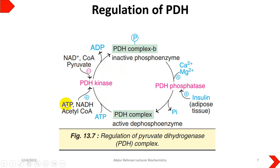When energy, NADH, and acetyl-CoA are already sufficient, there is no need for PDH to remain active, so it is phosphorylated by PDH kinase. However, if there are high concentrations of NAD, Coenzyme-A (not acetyl-CoA), and pyruvate, these have an inhibitory effect on pyruvate dehydrogenase kinase.